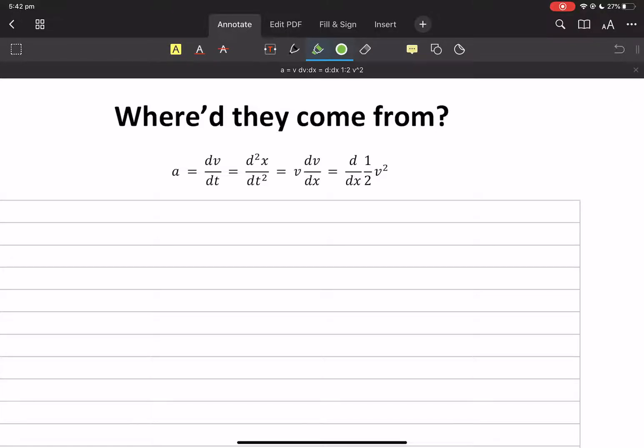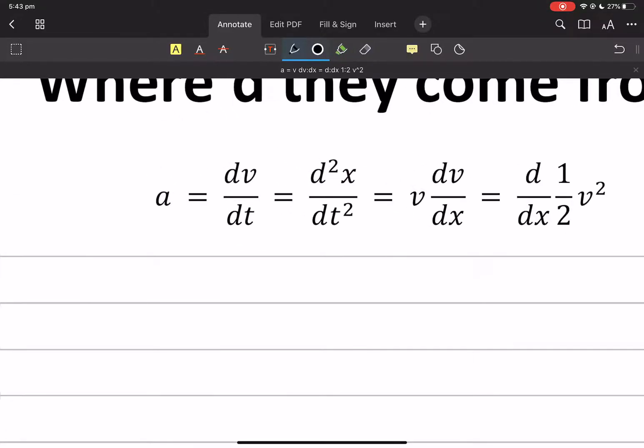Okay, we've got 'where'd they come from?' We've got a whole list of things that's acceleration here, and we're going to work out how they got onto the formula sheet. They are there on the formula sheet, but how and where do they come from? It's not dark magic.